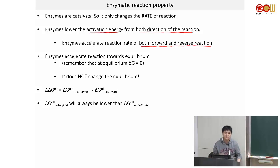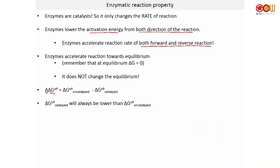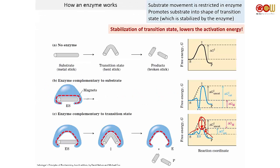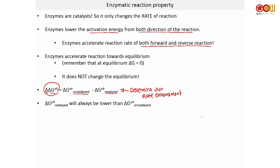We define delta-delta G‡ (delta G not double dagger) as the difference between the activation energy of the uncatalyzed reaction minus the catalyzed reaction. This determines our rate enhancement — it refers to the change in energy for the transition state. The more energy you save, the faster the enzyme rate.